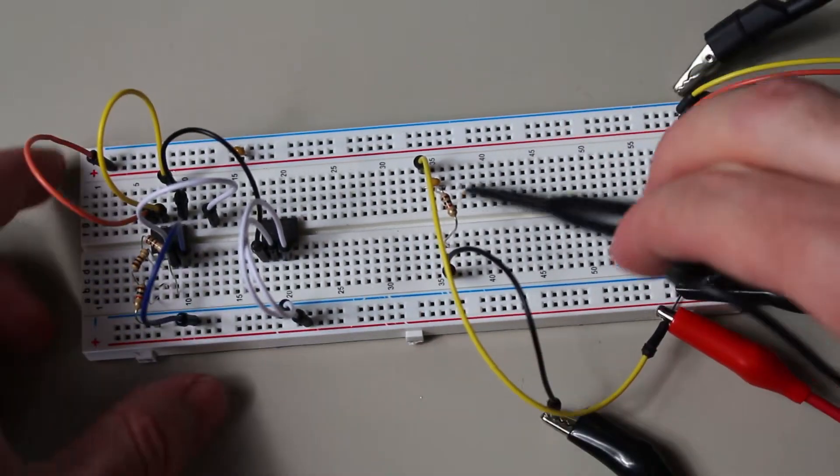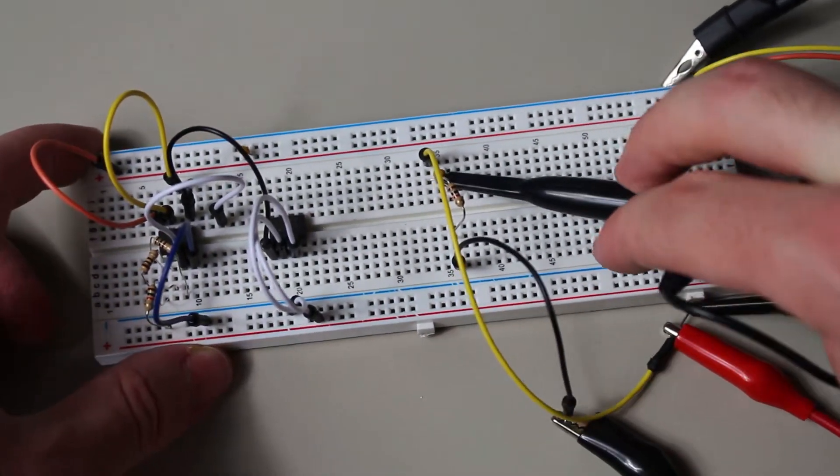Here is a 100 nanofarad capacitor and a 1kohm resistor in series with this AC sine wave signal. The AC signal is running at 1kHz. At 1kHz, this capacitor should have a reactance of about 1.6kohms.